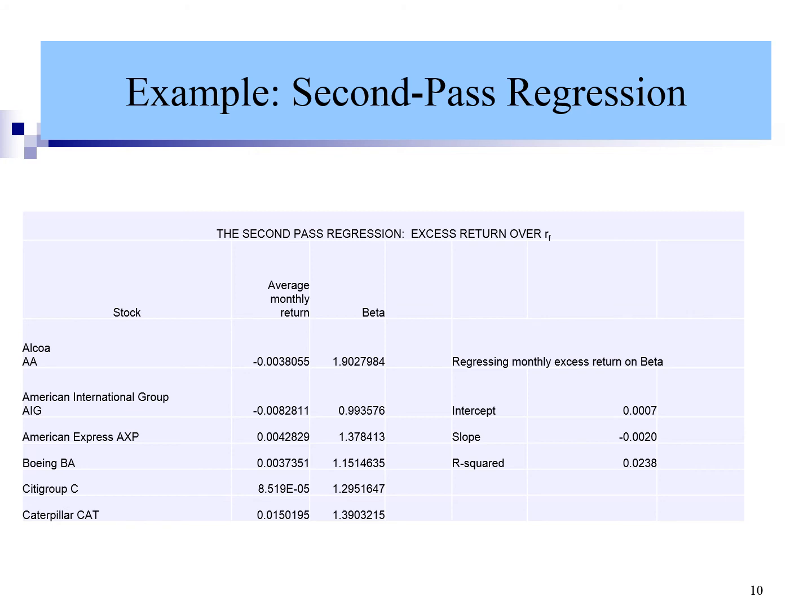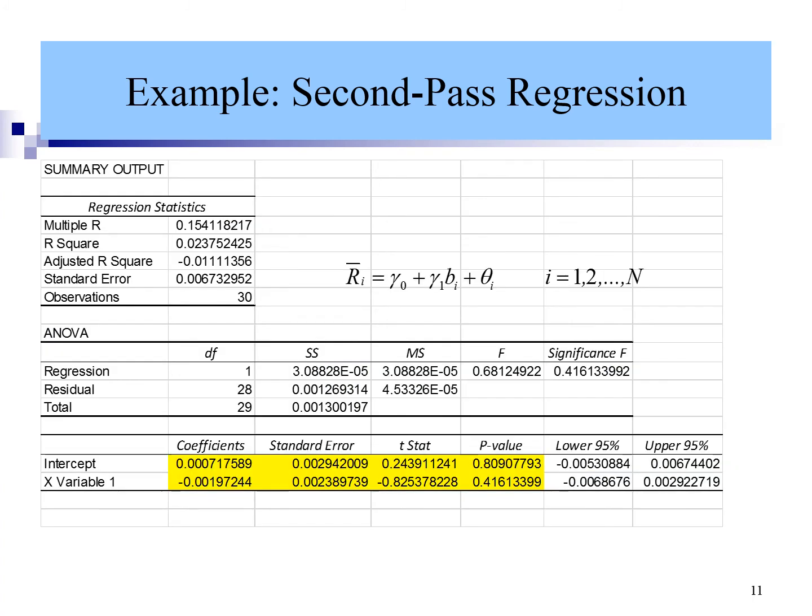From the Excel spreadsheet, you can see that the average monthly excess return of each stock is regressed on its beta. We can use Excel functions to calculate the intercept, beta or slope, and R-squared. This result is generated using data analysis regression. The x variable is the beta and the y variable is the average excess return. The objective is to check the t-statistic of gamma 0 and gamma 1. The result shows that gamma 0 and gamma 1 are not significantly different from 0.